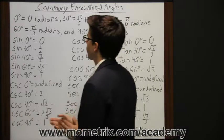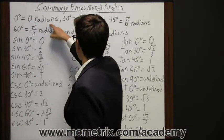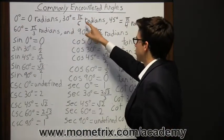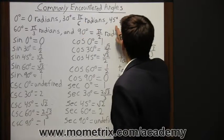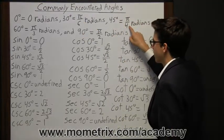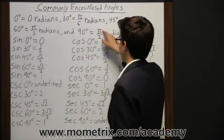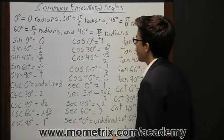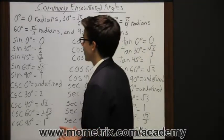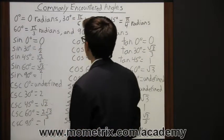Let's go ahead and dive into that. For zero degrees that's equal to zero radians, 30 degrees is equal to pi over 6 radians, 45 degrees pi over 4 radians, 60 degrees pi over 3 radians, and 90 degrees is equal to pi over 2 radians.